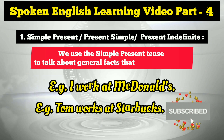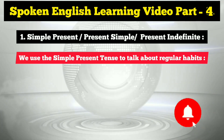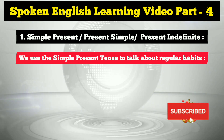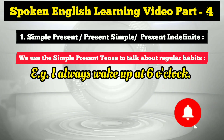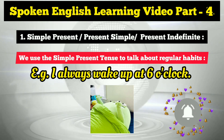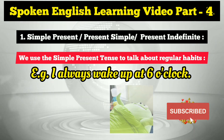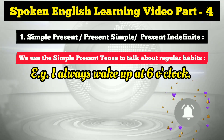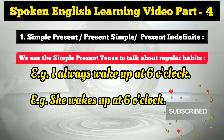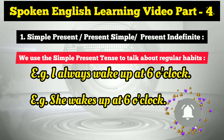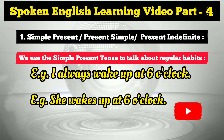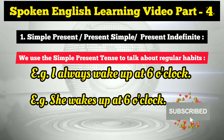We also use the simple present tense to talk about regular habits. For example: 'I always wake up at six o'clock.' You can use adverbs of frequency like always, often, sometimes. For third person singular number, remember to add 's': 'She wakes up at six o'clock.' So 'I always wake up' but 'she wakes up.'